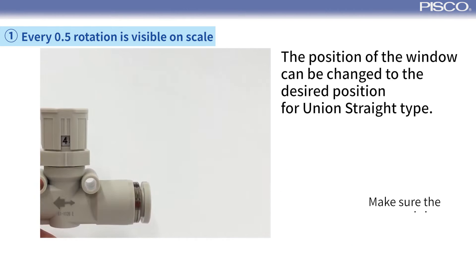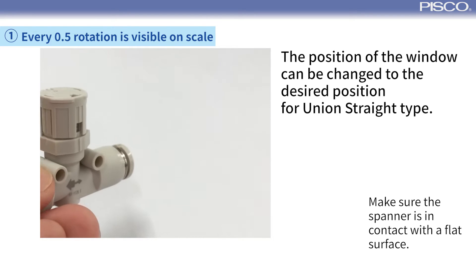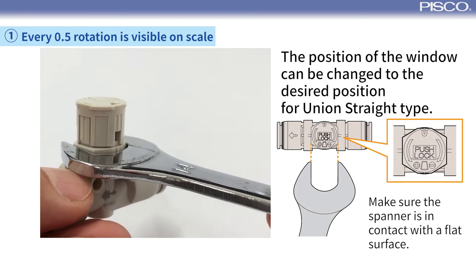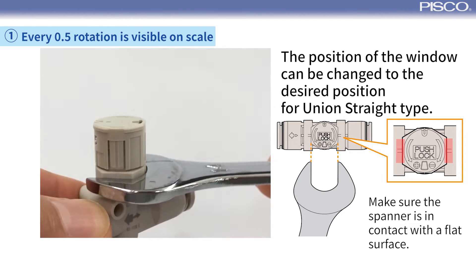The position of the window can be changed with a range for union straight type. Make sure the spanner is in contact with a flat surface.